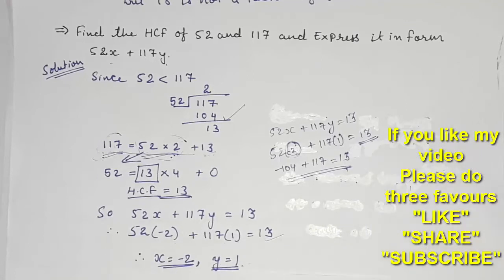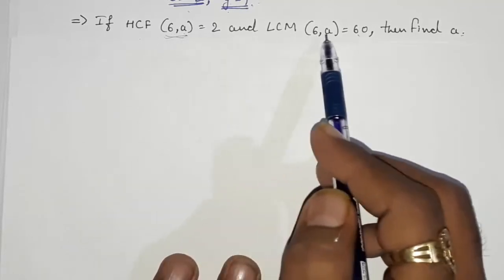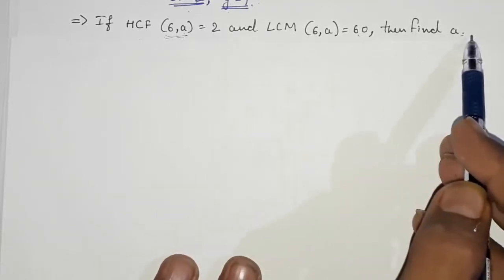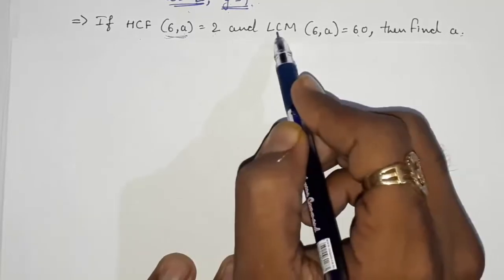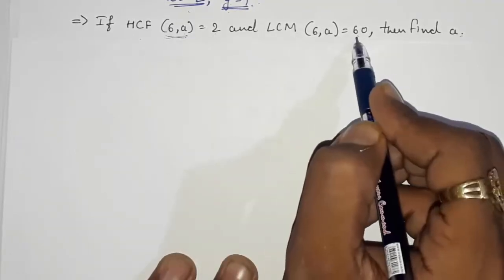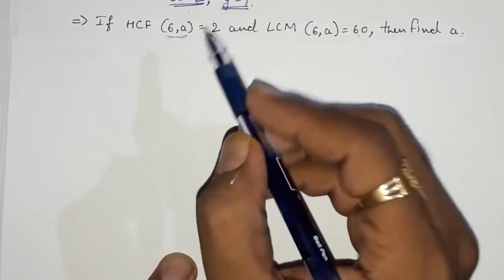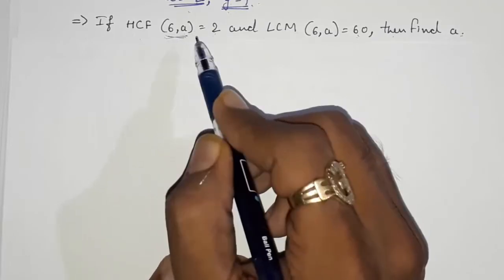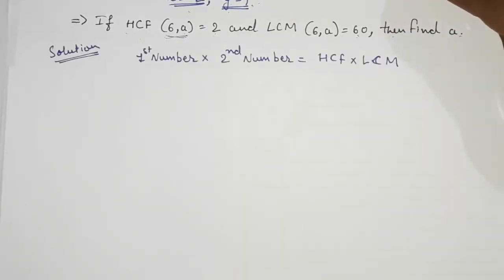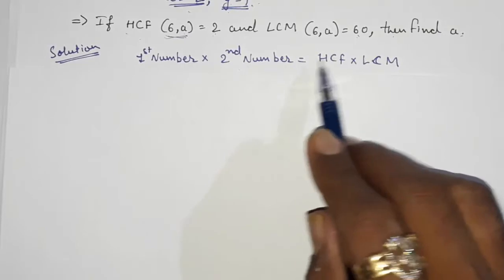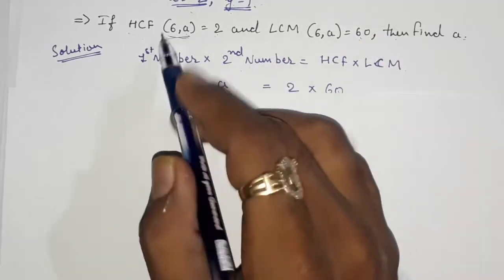Moving to question number three: If HCF(6, a) = 2 and LCM(6, a) = 60, find a. We have the formula: first number × second number = HCF × LCM. So 6 × a = 2 × 60.